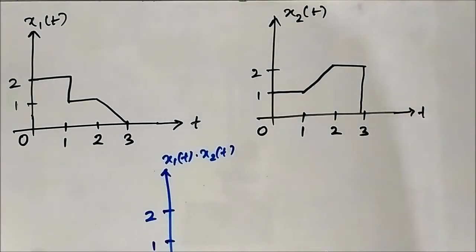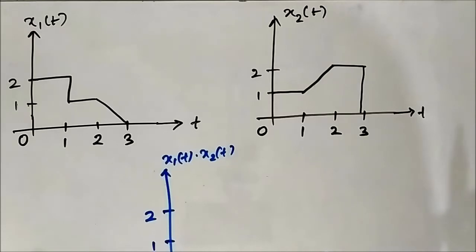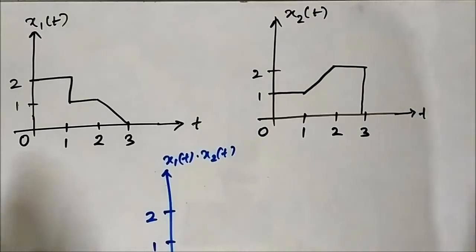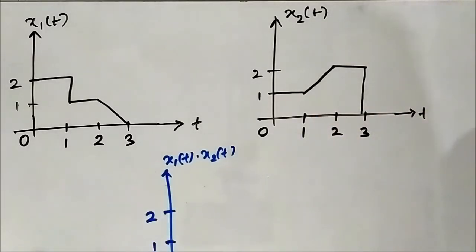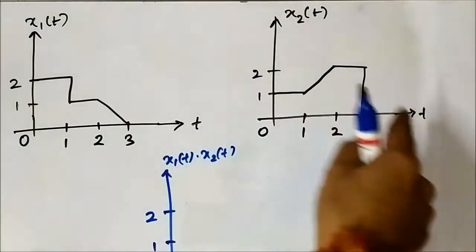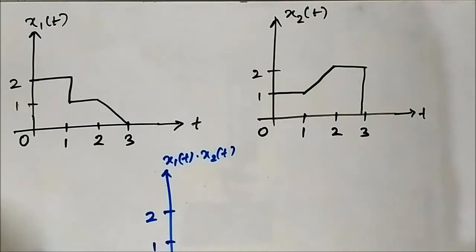Previously we performed signal multiplication on basic signals such as step and ramp. In this video we are going to perform signal multiplication on some random signals of different shapes. Here we have two signals, x1(t) and x2(t), and we have to perform signal multiplication on them.